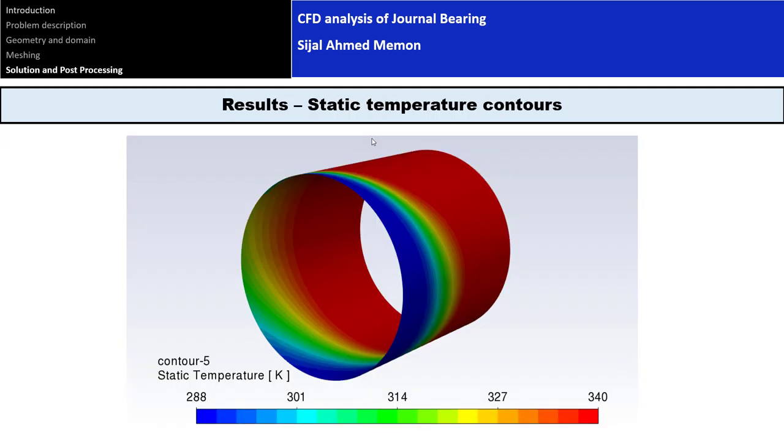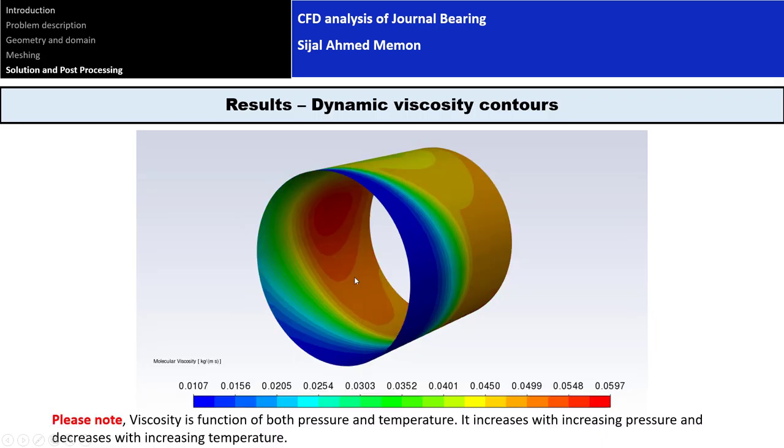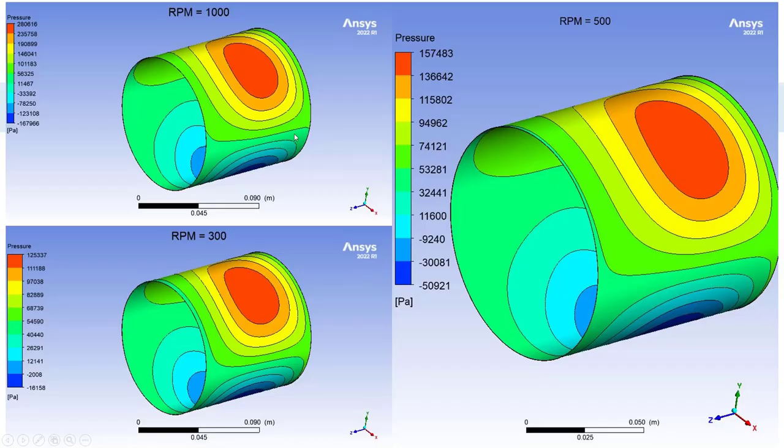Then we'll set up the solution, run it, and get results. I will discuss post-processing of the results in CFD-Post, especially the variation of pressure versus angle around the circumference of the journal bearing. This is the case where I discuss three RPMs and their pressure variation across the circumference.